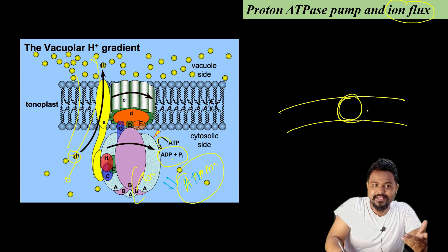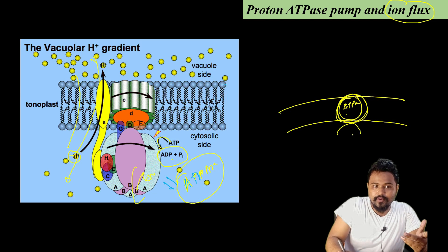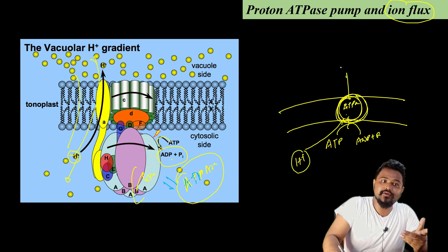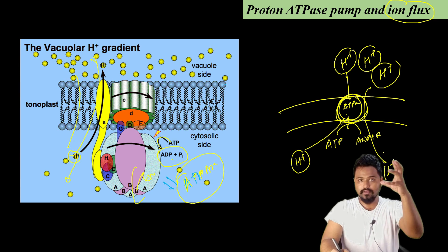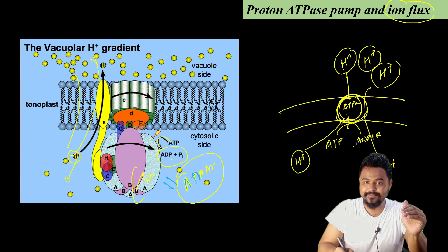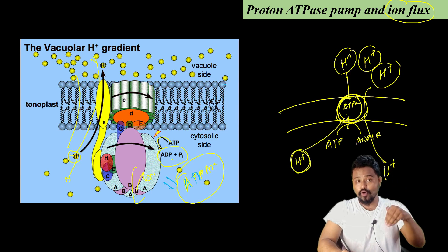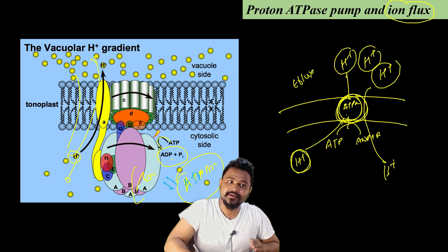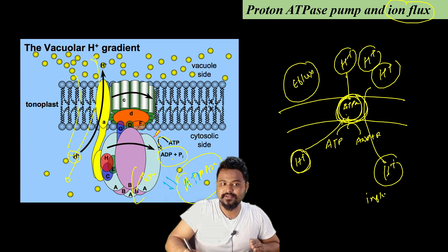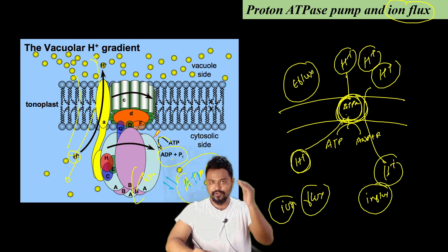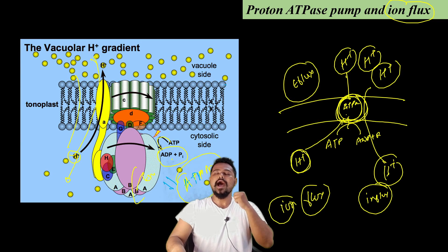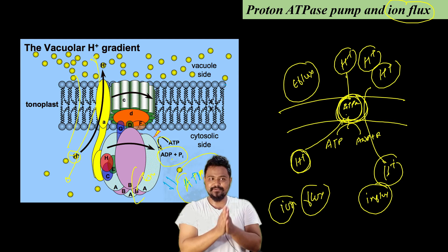Here's the membrane with the ATPase pump. The ATPase pump converts ATP to ADP, using this energy to transport hydrogen ions. This creates a concentration gradient of hydrogen ions inside the cell. With the use of ATP energy, hydrogen ions undergo influx with the help of this ATPase pump.